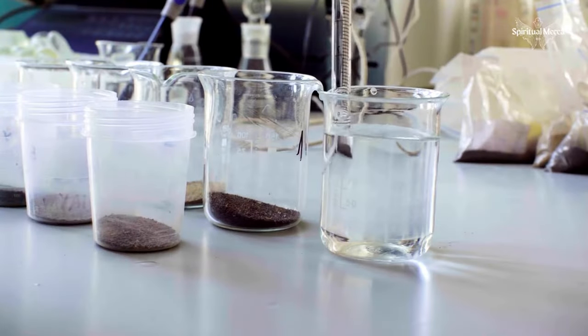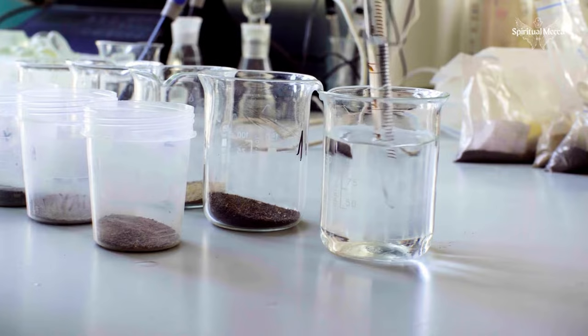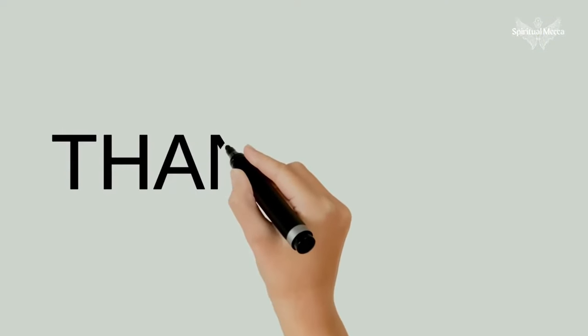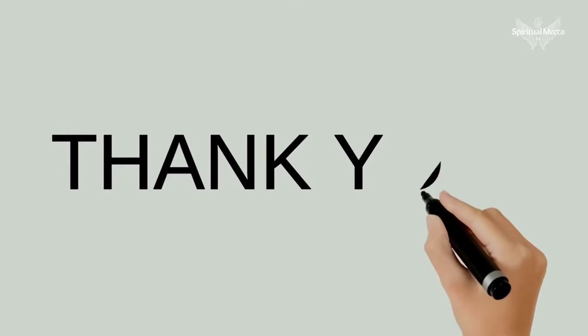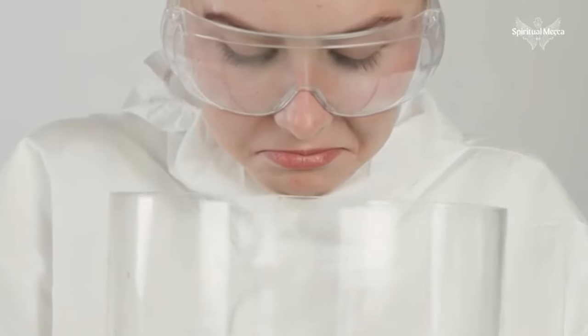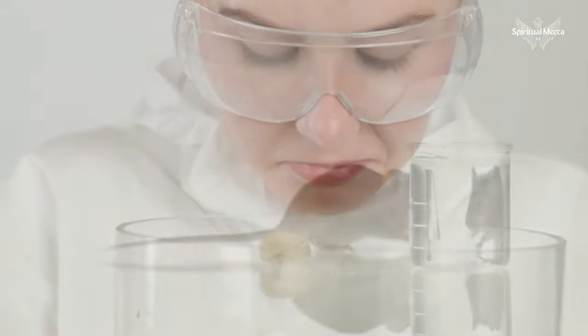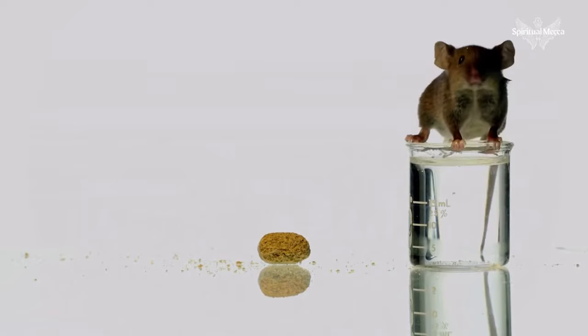Dr. Emoto labeled three beakers of cooked rice with water as follows. Beaker number one was labeled with the words 'thank you.' Beaker number two was labeled 'you idiot.' And finally, beaker number three was ignored.